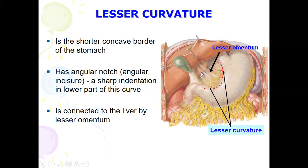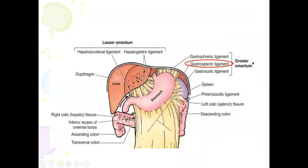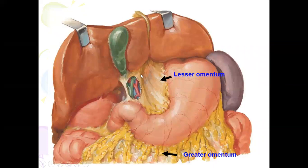The greater curvature is the longer, convex border of the stomach. The greater curvature is connected to the spleen by the gastrosplenic ligament, and it is connected to the transverse colon by the greater omentum. This picture shows both the lesser omentum and the greater omentum clearly.